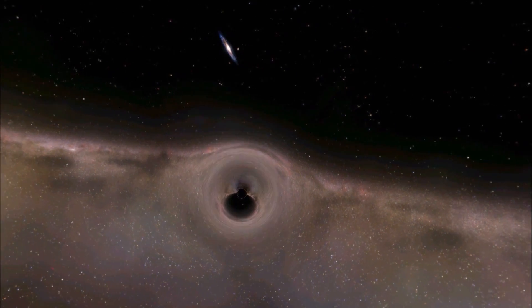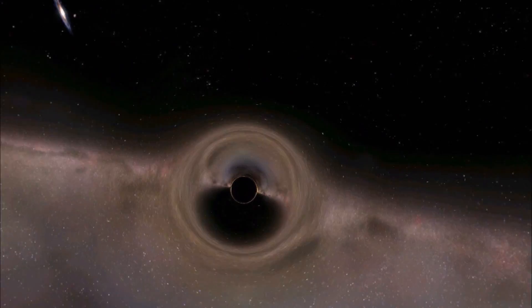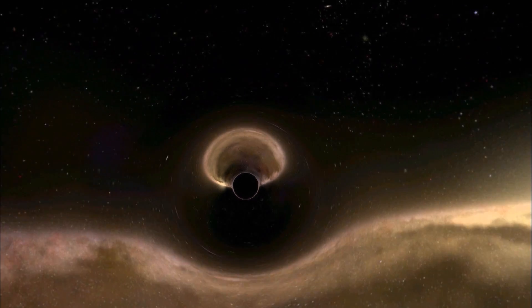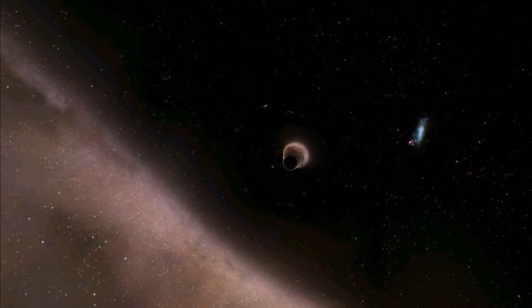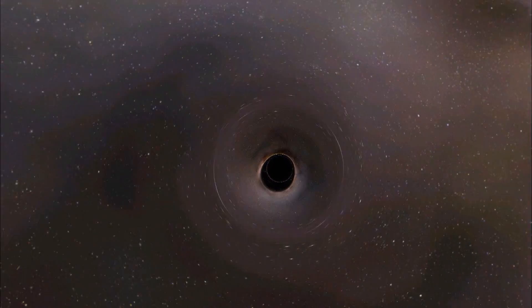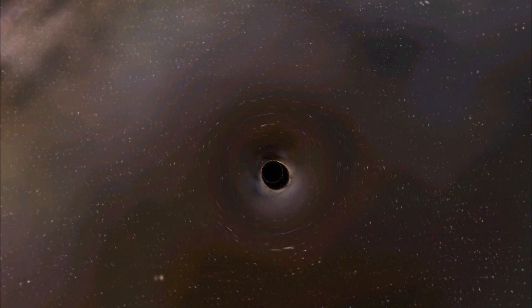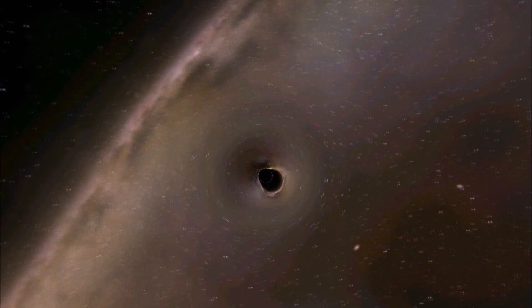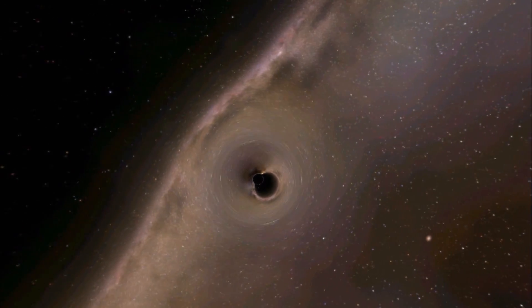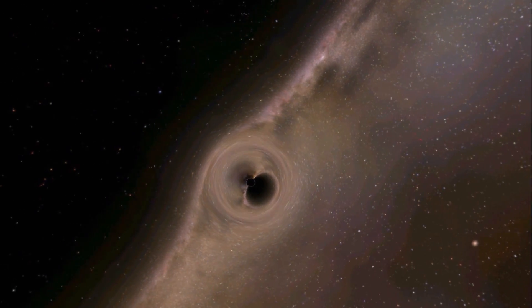When a black hole is born, the energy gets transformed from the energy of the matter to the energy of warped space-time. So it's a transformation of the form of the energy from one to another, but the energy is still conserved. What you're left behind with is warped space-time that has a huge amount of energy in it.